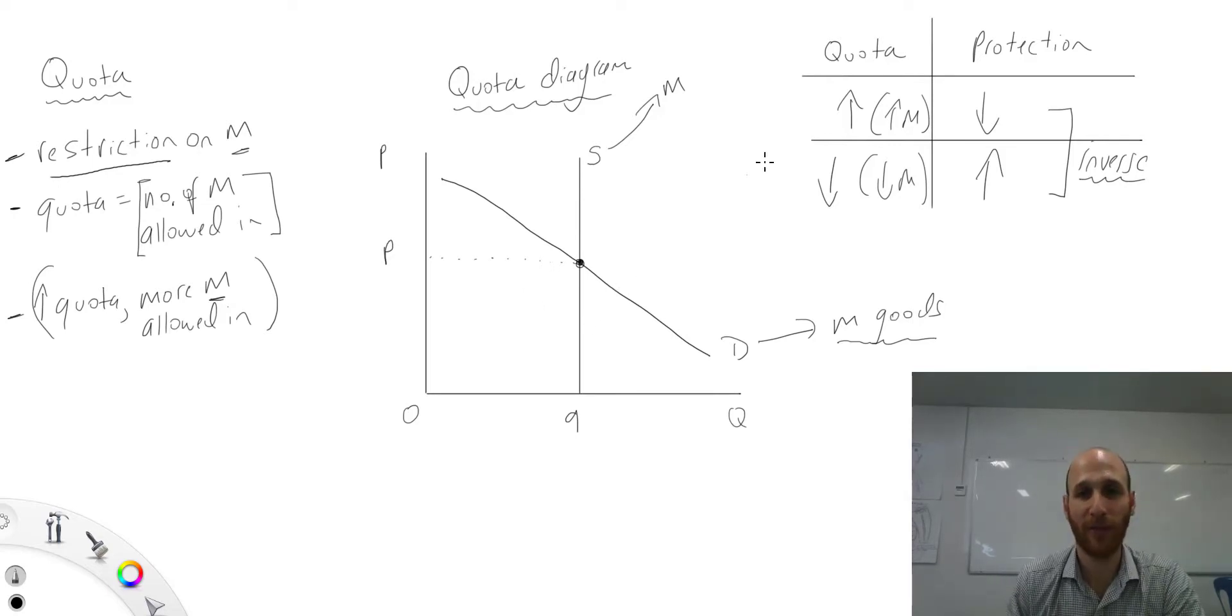Now let's have a look at situation one. There is going to be more imports allowed in. So if we look at it here, this is S1, which matches up with this scenario here. So here we are looking at more imports being allowed in. So this is Q1. And then we can see if there are more imports allowed in, then the price is going to fall. P1. That's going to fall. And so this movement in S1 is a decrease in protection.